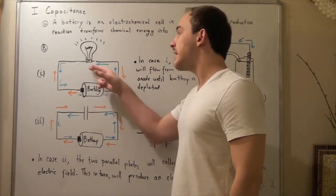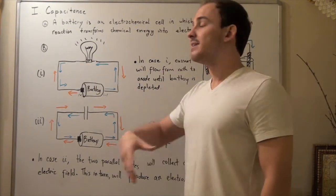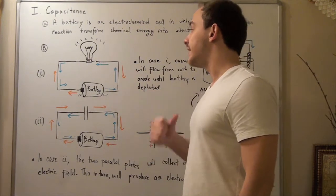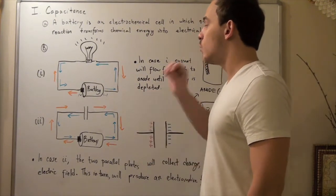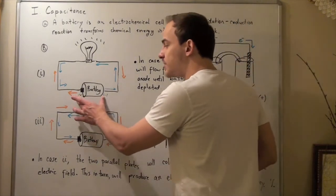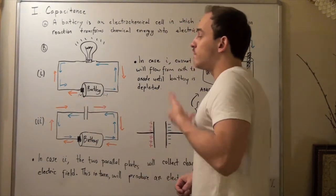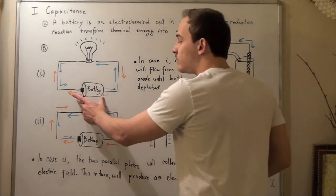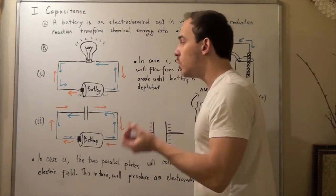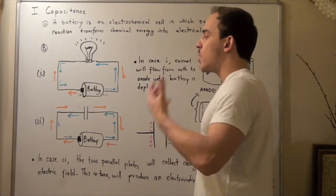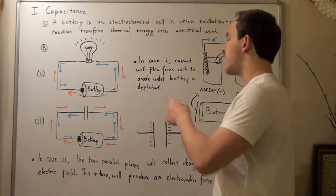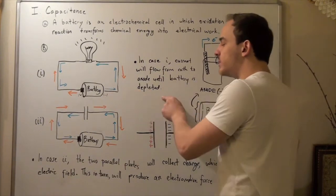Eventually, the light bulb will get dimmer and dimmer until it stops lighting. At that point, the electric potential difference — the voltage difference between the anode and cathode — is exactly zero. Electrons will no longer flow when the electromotive force reaches zero, and we say the battery is depleted.